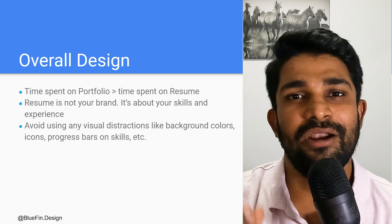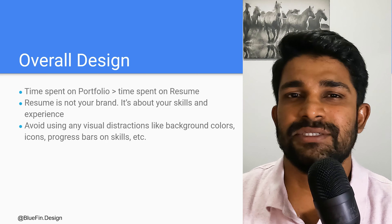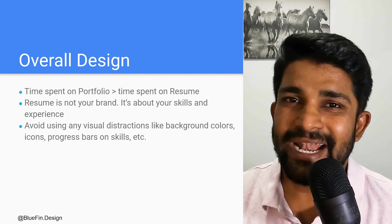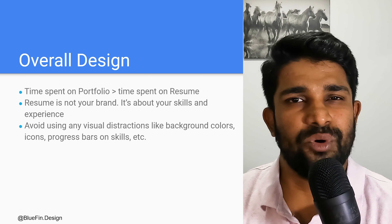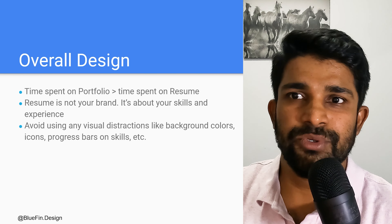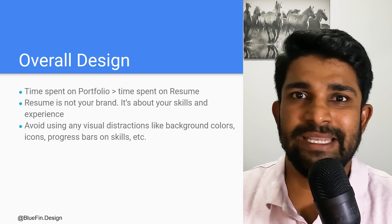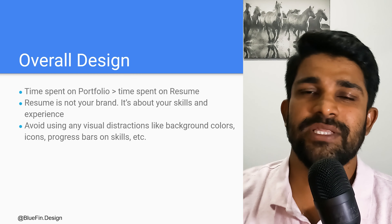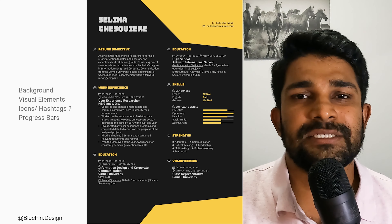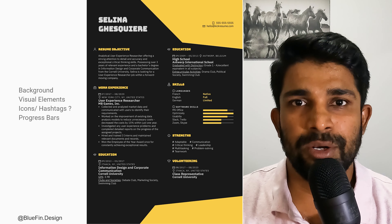Avoid using any visual distractions on your resume — for example, background colors, gradients, icons, or even progress bars on your skills. There is no set ceiling to your skills. You cannot say you're at 100% of team building — what does 100% even mean? There's no ceiling, so it doesn't make sense to add progress bars.